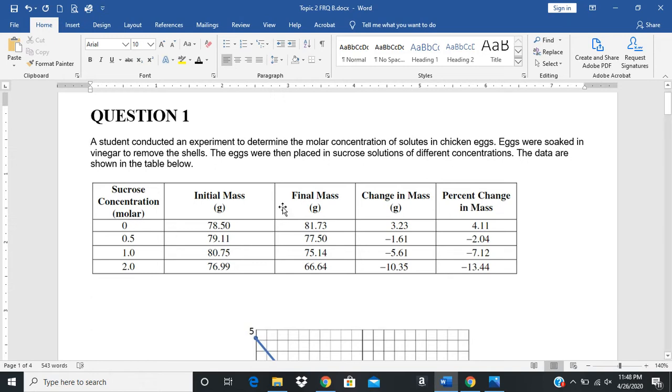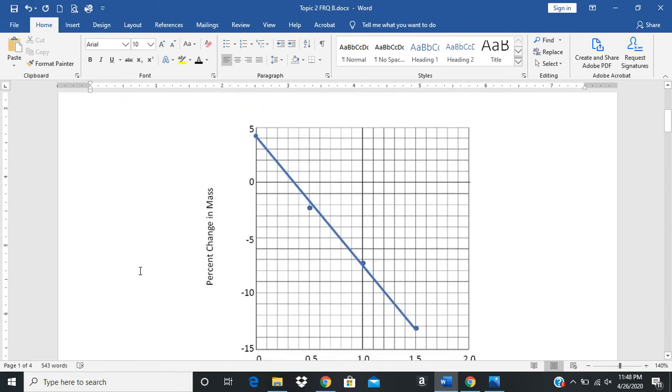Initially they massed them, then they took their mass after they sat for a certain period of time and saw the change in mass. This is the percentage change in mass. What we're presented with is a graph that shows us the percent change in mass compared to the molar concentration, so we can see what this looked like.